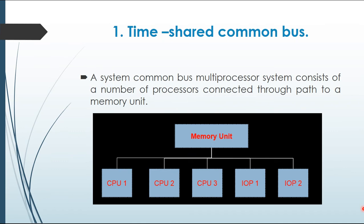First, time-shared common bus. A common bus multiprocessor system consists of a number of processors connected through a path to a memory unit. It includes one connection with multiple processors and output processors.